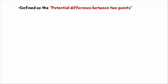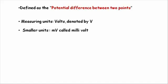What is voltage? It can be defined as the potential difference between two points. Voltage is measured in volts, represented by the capital letter V. Smaller units of volts are millivolts represented by mV. Thousand millivolts is equal to one volt.